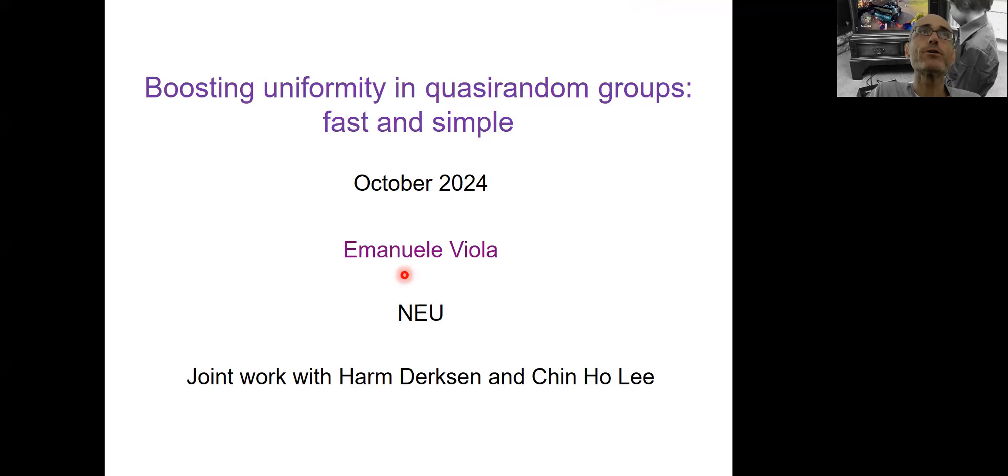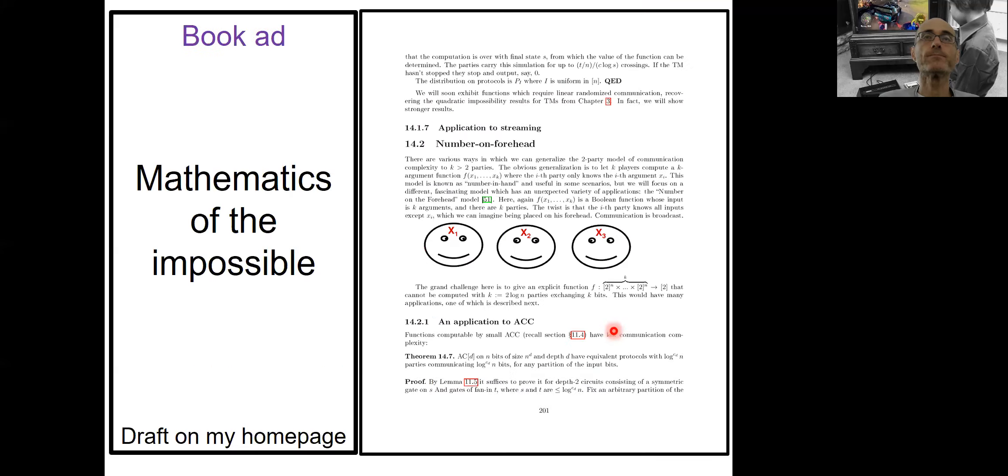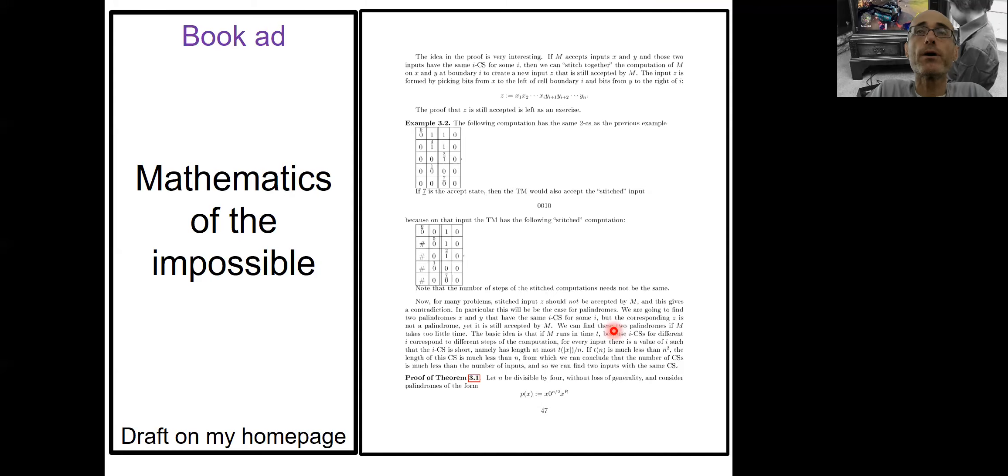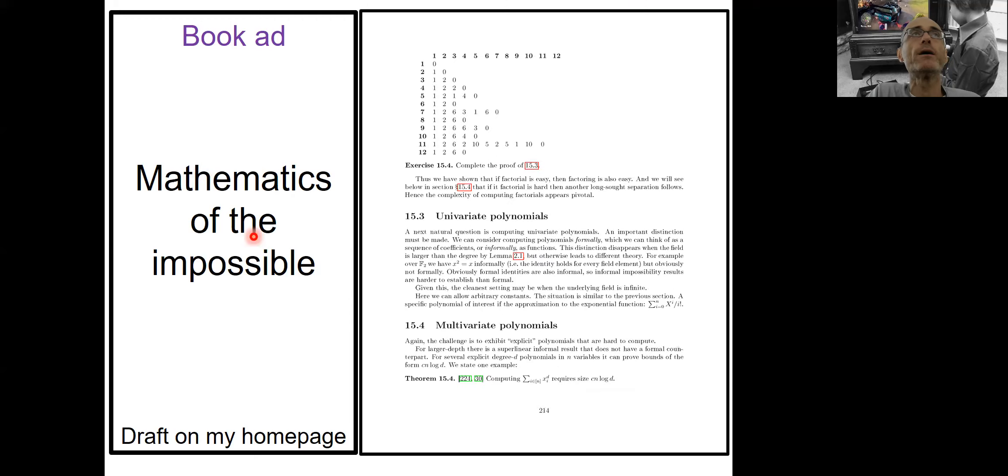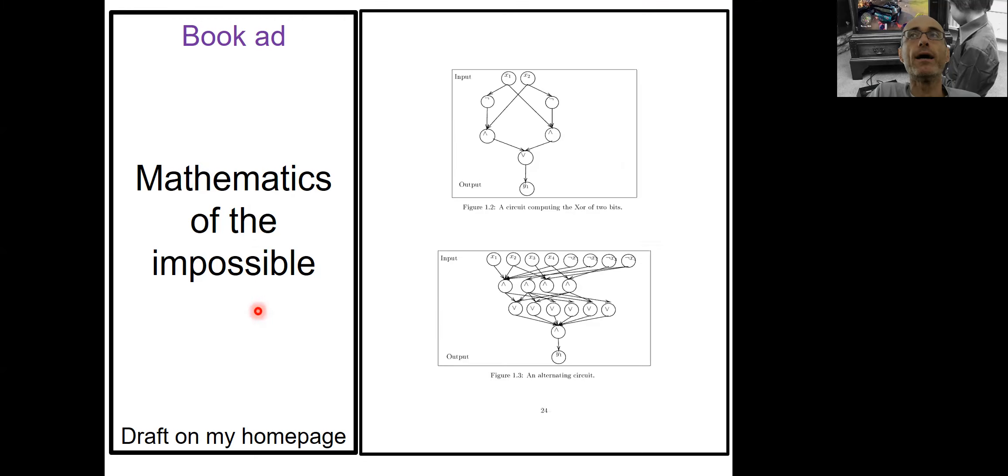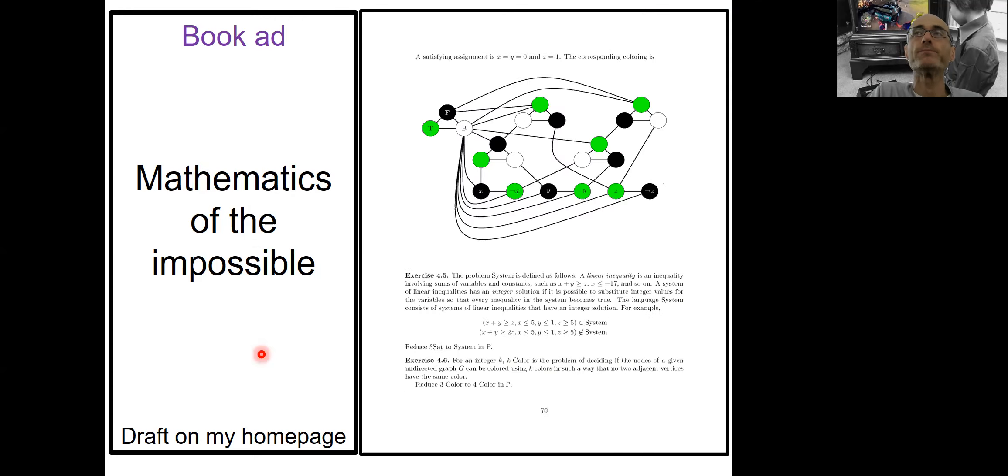Hello everybody, the title of this talk is Boosting Uniformity in Quasi-Random Groups, Fast and Simple, and this is a joint work with Harm Derksen and my former student Shin Ho Li. First, an advertisement. I'm writing a book, it's called Mathematics of the Impossible. You can find the draft on my homepage, check it out.